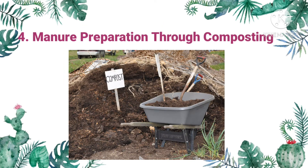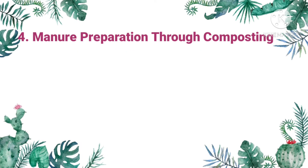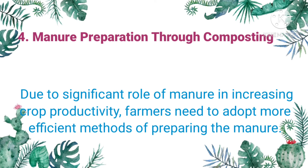Fourth is manure preparation through composting. Do you use recommended composting practices by using different organic materials to supply major nutrients like nitrogen, phosphorus, and potassium? Due to the significant role of manure in increasing crop productivity, farmers need to adopt more efficient methods of preparing manure. Did you know that you can create your own compost at the comfort of your home? Please watch this video.